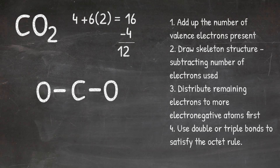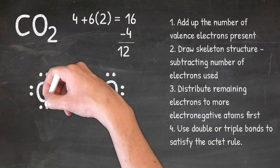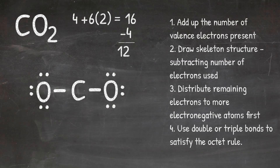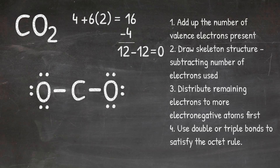Moving to step three, I distribute those 12 electrons to the more electronegative atoms — in this case, oxygen. I put six electrons around one oxygen, then six electrons around the other, for a total of 12 electrons distributed. I subtract those 12 from the 12 remaining, giving me zero electrons left. Now I move to step four and check that every element is satisfied. Each oxygen has one single bond and three lone pairs, giving eight electrons — satisfied. However, when I look at the carbon, I see only two single bonds around it, which is just four electrons. The carbon is not yet satisfied, which means I'm going to have to use double or triple bonds to satisfy the octet rule.